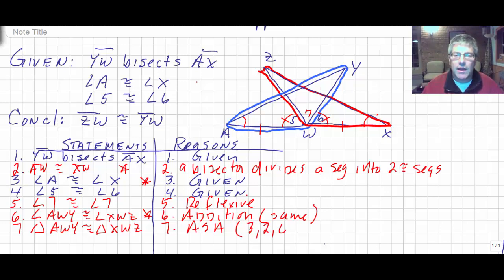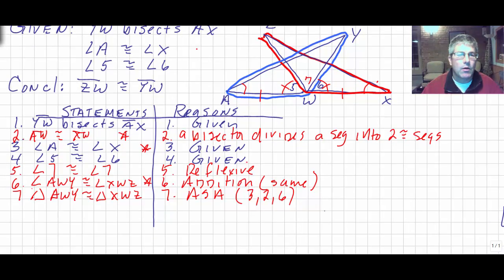And then we know that segment ZW is congruent to segment YW. And that is our corresponding parts of congruent triangles are congruent or CPCTC.